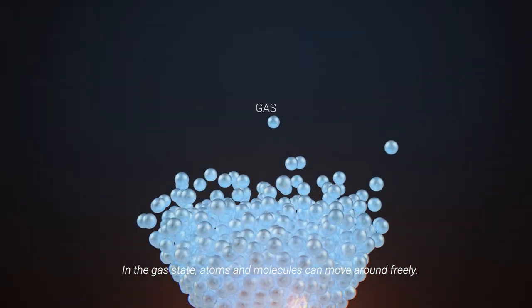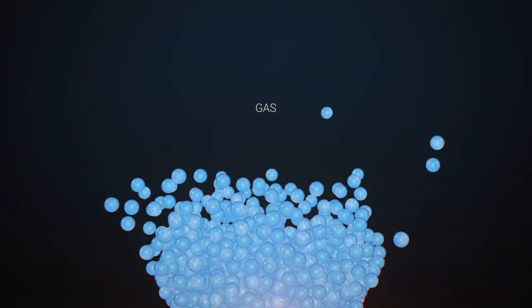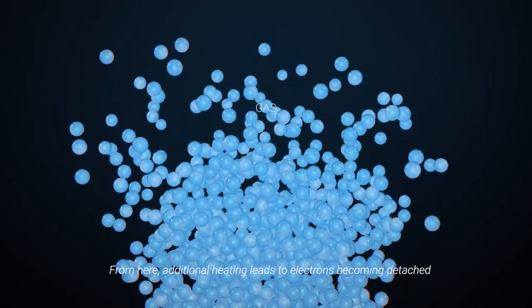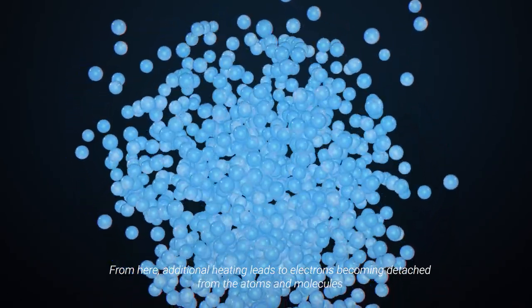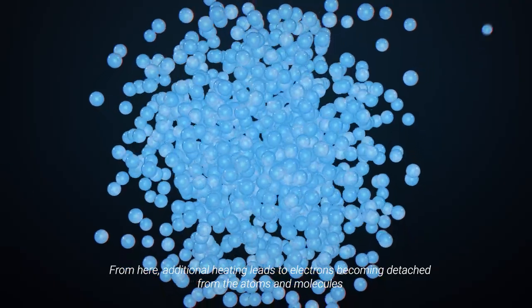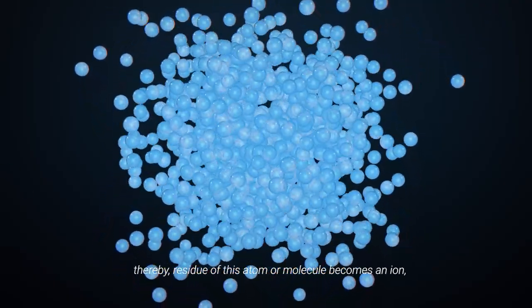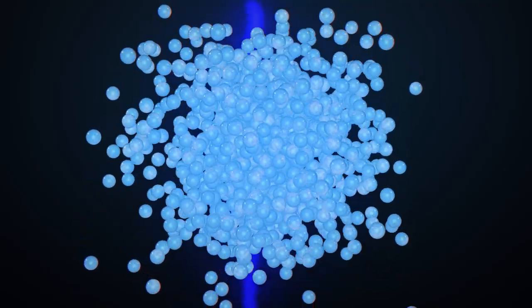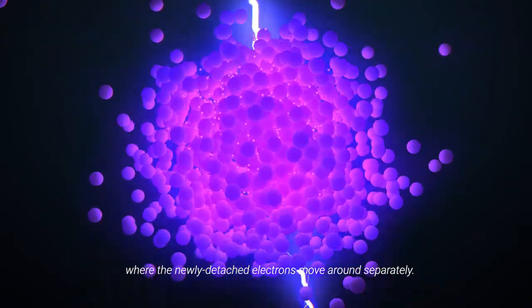In the gas state, atoms and molecules can move around freely. From here, additional heating leads to electrons becoming detached from the atoms and molecules. Thereby, the residue of this atom or molecule becomes an ion, where the newly detached electrons move around separately.